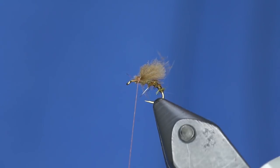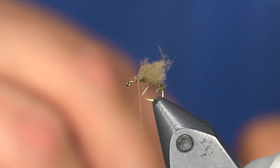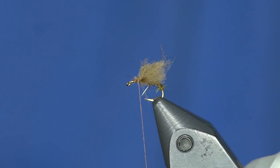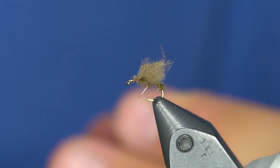Now to create the spent wings over the top of the fly, well first of all I'm going to cover up my thread wraps a little bit, just with a little bit more of that same dubbing.